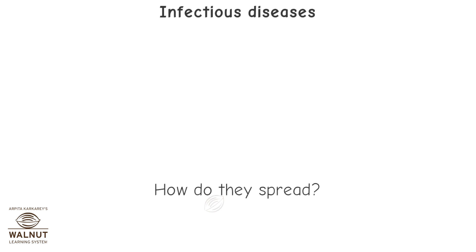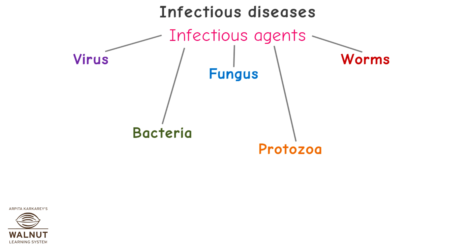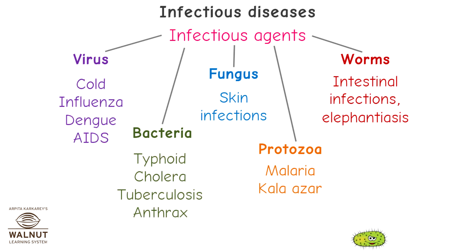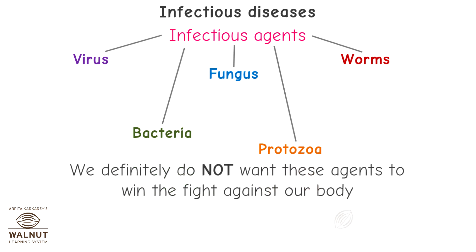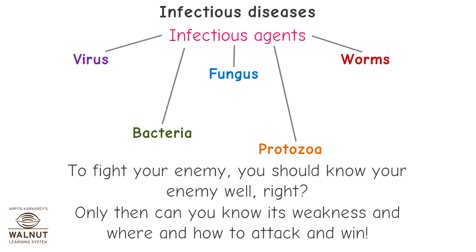Infectious diseases — how do they spread? The agents include virus, bacteria, fungus, protozoa, and worms. Diseases caused by viruses include cold, influenza, dengue, and AIDS. Diseases caused by bacteria include typhoid, cholera, tuberculosis, and anthrax. Diseases caused by fungus are skin infections. Diseases caused by protozoa are malaria and kala-azar. Diseases caused by worms are intestinal infections and elephantiasis. We definitely do not want these agents to win the fight against our body.